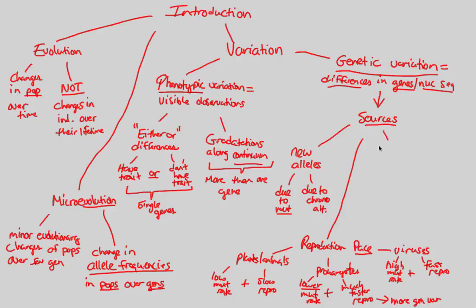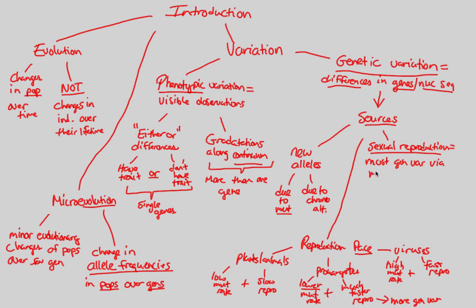One last source of variation is sexual reproduction — something we covered in terms of meiosis. Sexual reproduction is a crucial source of genetic variation. It is costly and not as easy as asexual reproduction, but it pays off. The benefit outweighs the cost. The benefit is that we get genetic variation, and most of the genetic variation due to sexual reproduction is via the famous process of meiosis, which drives sexual reproduction and gives us unique allele combinations.